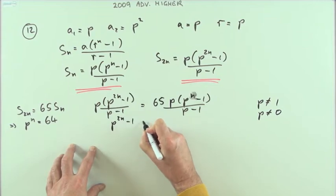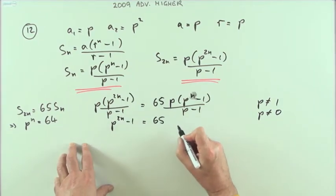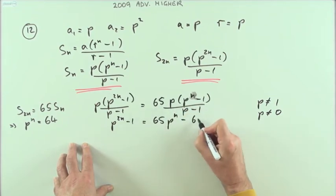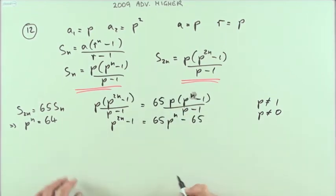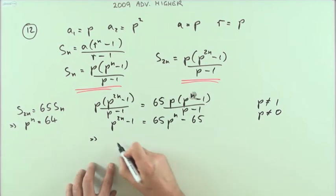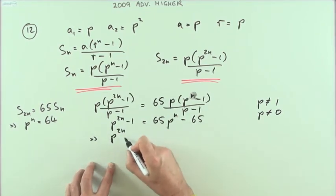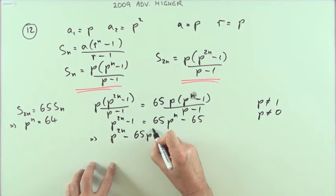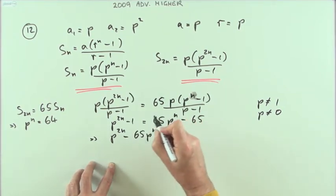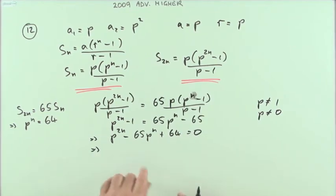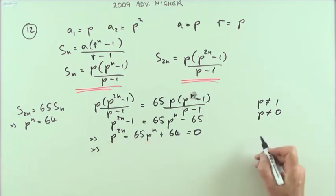I'm left with p^2n - 1 equals 65(p^n - 65), which gives me p^2n - 65p^n + 64 = 0. Now that's a quadratic in p^n.